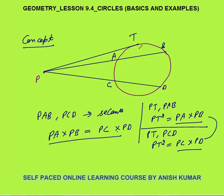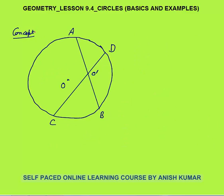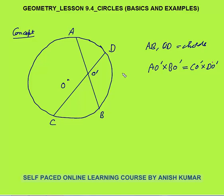The next concept is very interesting. If AB and CD are chords of a circle — they could be diameters also — and they intersect at point O', then AO' into BO' will always be equal to CO' into DO'. We can prove this by properties we just discussed.